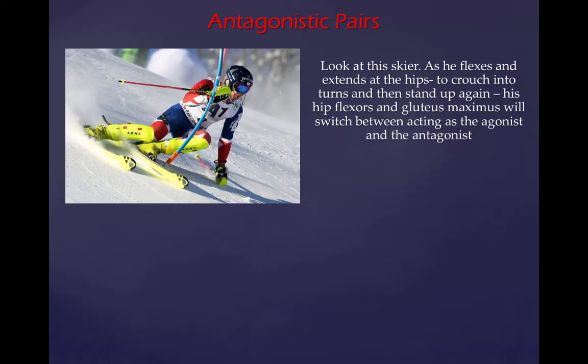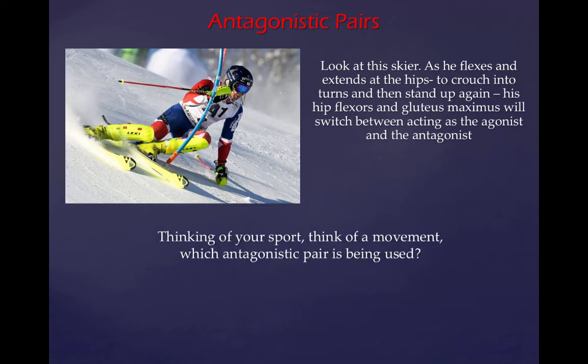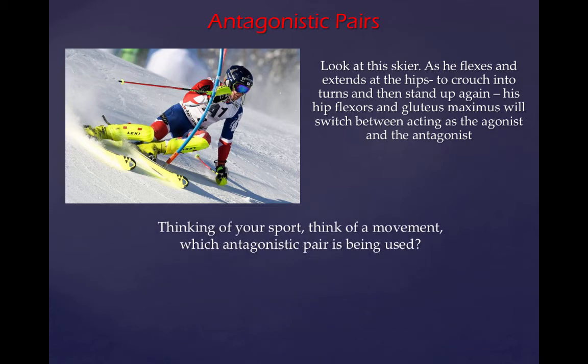Look at this skier, as he flexes and extends at the hips to crouch into the turn and then stands up again. His hip flexors and gluteus maximus will switch between acting as the agonist and antagonist. Think of your sport — think of a movement in which an antagonistic pair is used.